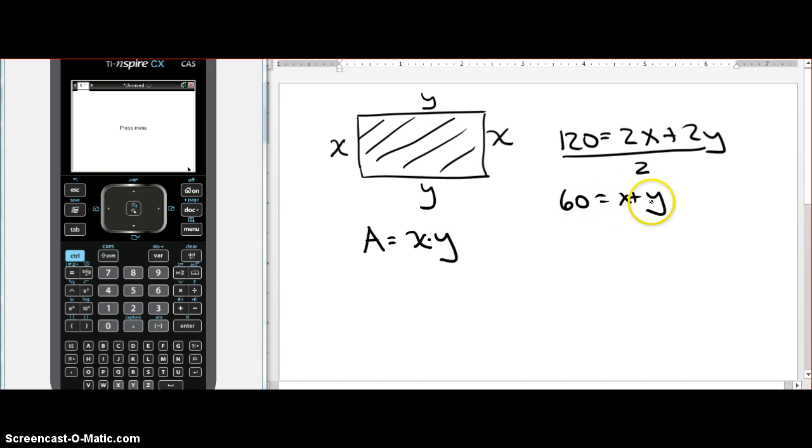Now with this second equation, I can substitute and eliminate one of my variables, x or y, thereby making my area equation a function. So let's get rid of the y variable. I'm going to solve for y here, subtract x. And now since y is equal to 60 minus x in this equation, y in this equation also must equal 60 minus x, because we're talking about the same rectangle.